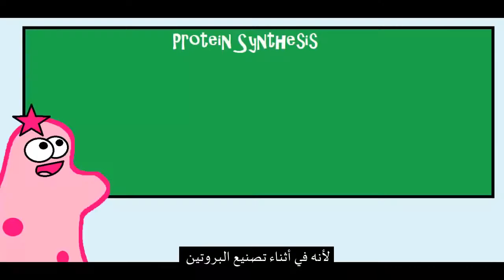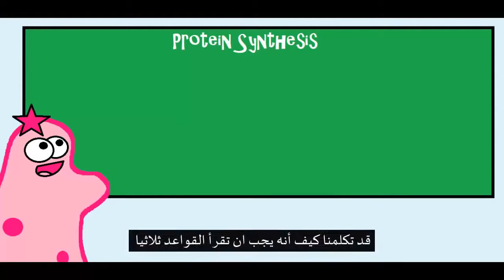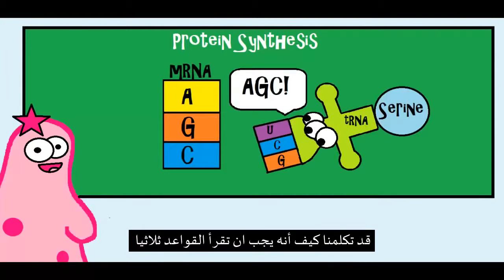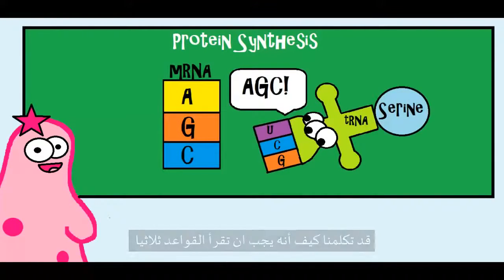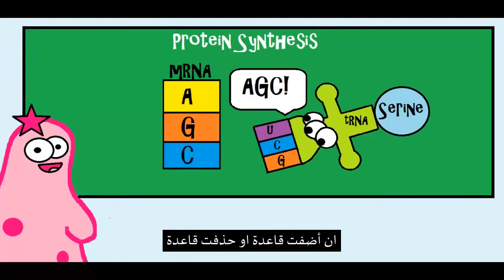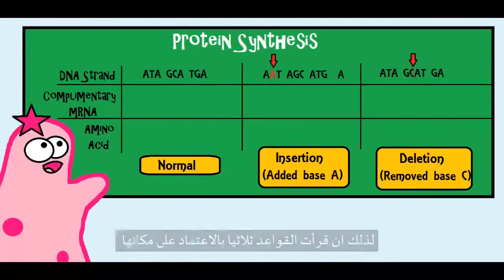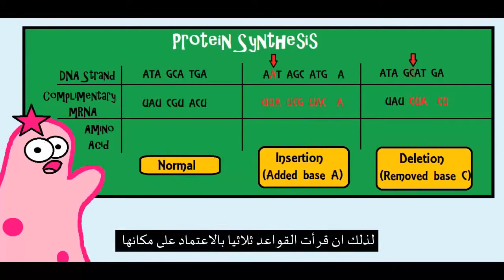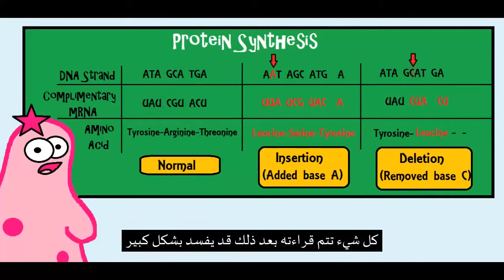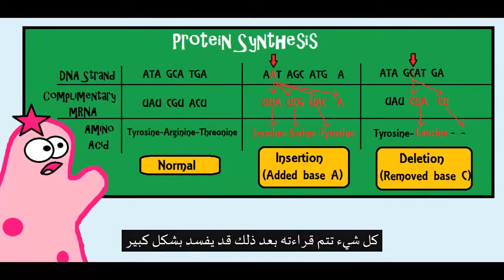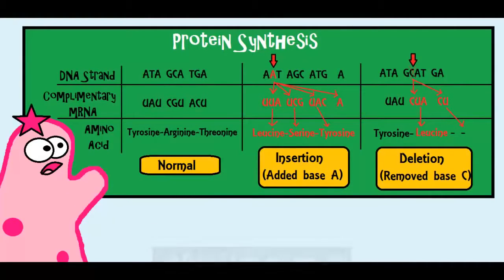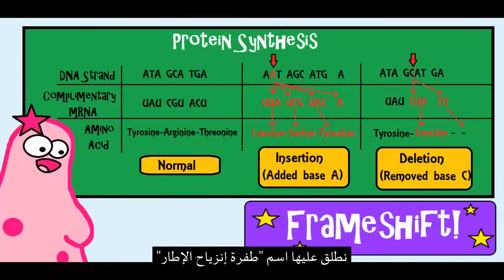Insertions and deletions have the potential to be especially dangerous. Because in protein synthesis, bases are read in threes. If you add a base or remove a base, suddenly the total number of bases has changed. So if you read in threes, depending on where it happened, everything read afterwards has the potential to get really messed up. We call this a frameshift.